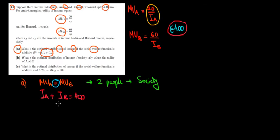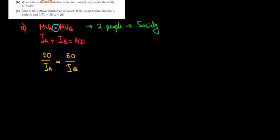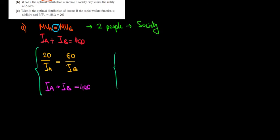So 20 divided by the income of Andre equals 60 divided by the income of Bernard. We also keep in mind that total income equals 400 euros — this is now a system of equations. From the first equation, 60 and 20 simplify: we get a factor of 3.